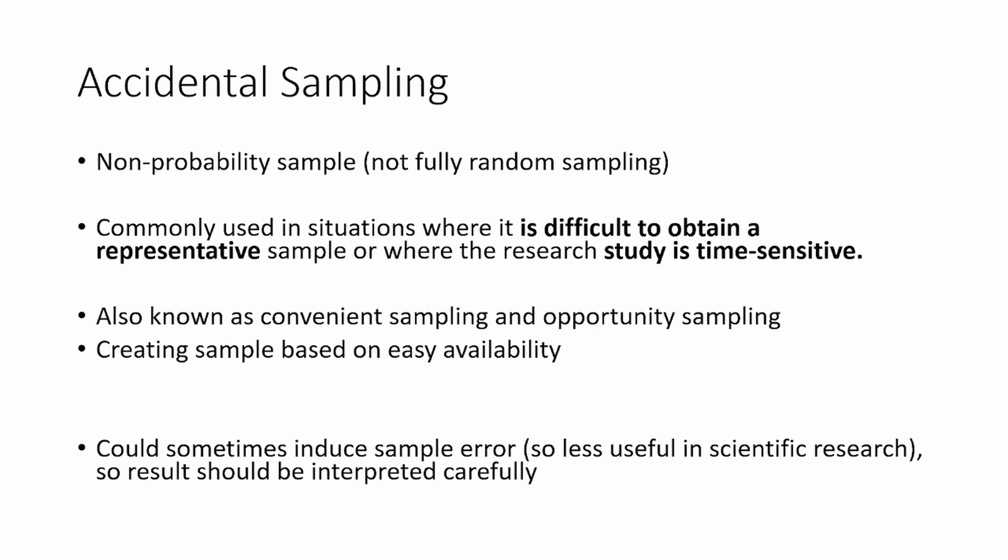Accidental sampling is also used when the research is not super scientific — that means it's not going to be causing a lot of political or academic disagreement from a lot of people. It's also known as convenient sampling or opportunity sampling — opportunity sampling because you are being opportunistic in a way, not trying to spend money and time to get representative data. It's called convenient sampling because it's more convenient; you can quickly get things done. You are basically creating a sample based on easy availability.